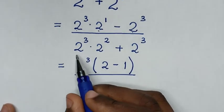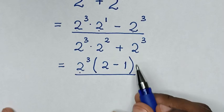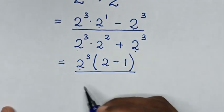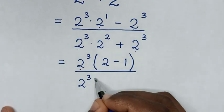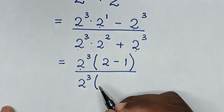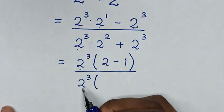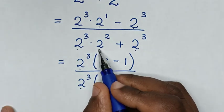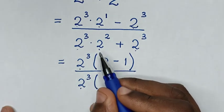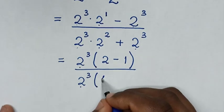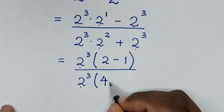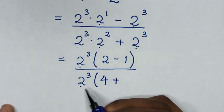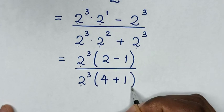Then over, from the denominator, 2 power of 3 is common. So we take 2 power of 3 out of the bracket. Then this divided by this is 2 power of 2, whereas 2 power of 2 is 2 times 2, which is 4. So it will be 4, then plus 1, closing the bracket.